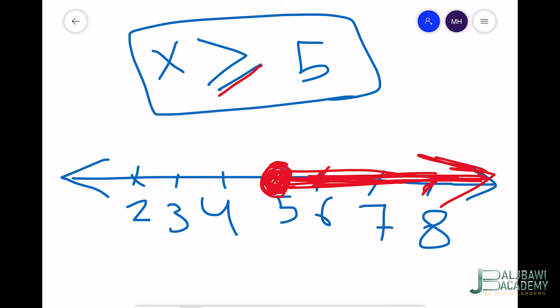And I draw an arrow to show that these values go on forever. By this, I have graphed this inequality.